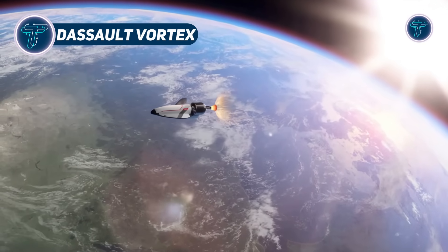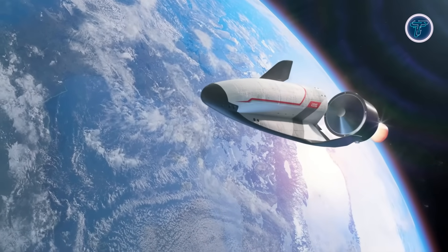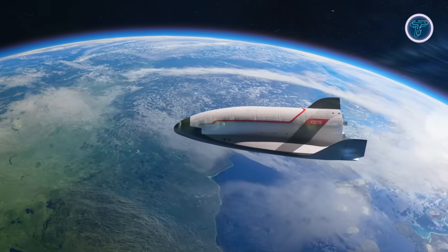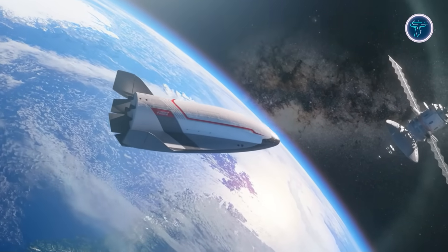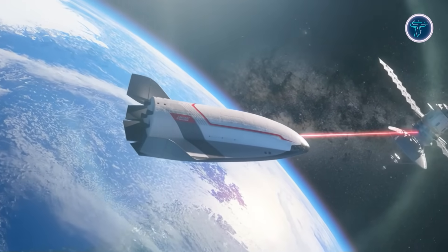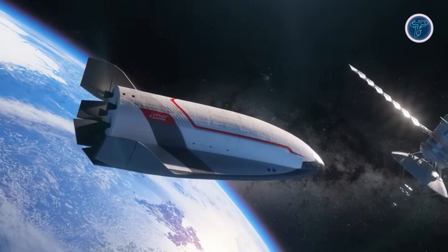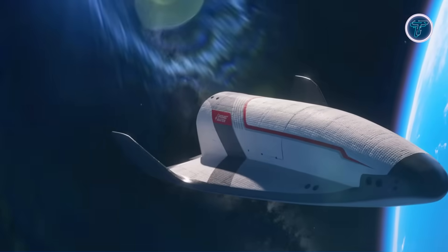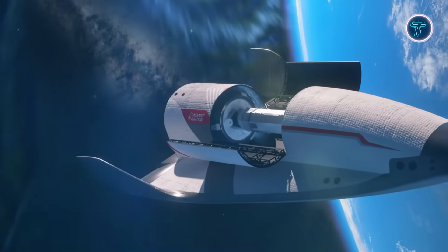Dassault Vortex. The Vortex Spaceplane is Dassault Aviation's visionary reusable orbital transport and exploration vehicle, aimed at providing efficient aircraft-like access to low Earth orbit. Designed from decades of French aerospace expertise, Vortex combines the versatility of a winged spacecraft with the reliability of proven thermal protection and aerodynamic re-entry systems. Launched atop a conventional rocket, the spaceplane maneuvers in orbit and returns to Earth with a horizontal landing on a runway, making recovery both safe and cost-effective.